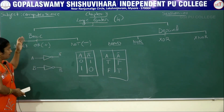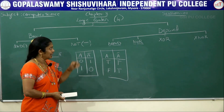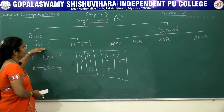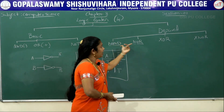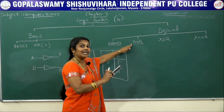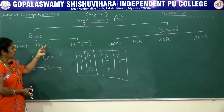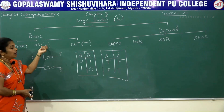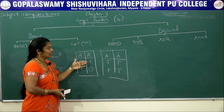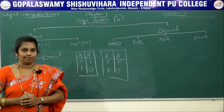These are the basic gates. Logic gates are electronic circuits that take one or more input signals and produce only one output signal. There are two types: basic gates and derived gates. Basic gates are AND gate, OR gate, and NOT gate. Derived gates are NAND, NOR, XOR, and XNOR — they are derived from basic gates. In the next class I am going to explain which are the derived gates and their symbols. Thank you.